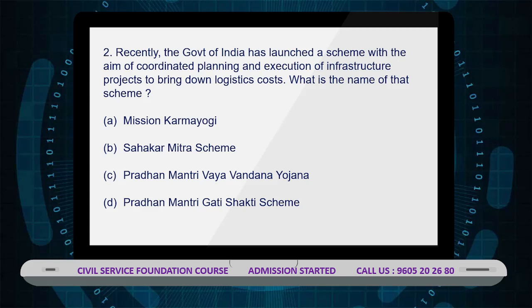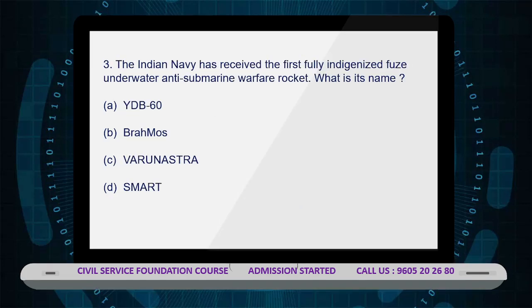This will help in removing long-standing issues such as disjointed planning, lack of standardization, problems with clearances, and timely creation and utilization of infrastructure capacities. The scheme will subsume the ₹110 lakh crore National Infrastructure Pipeline that was launched in 2019.